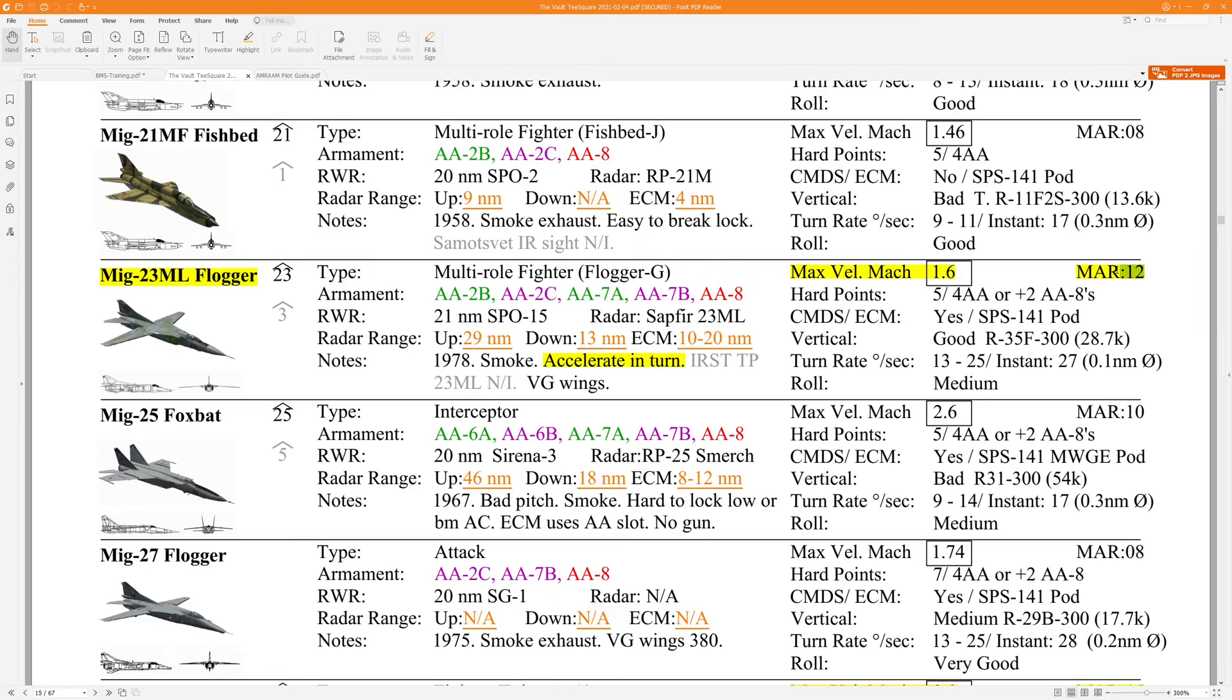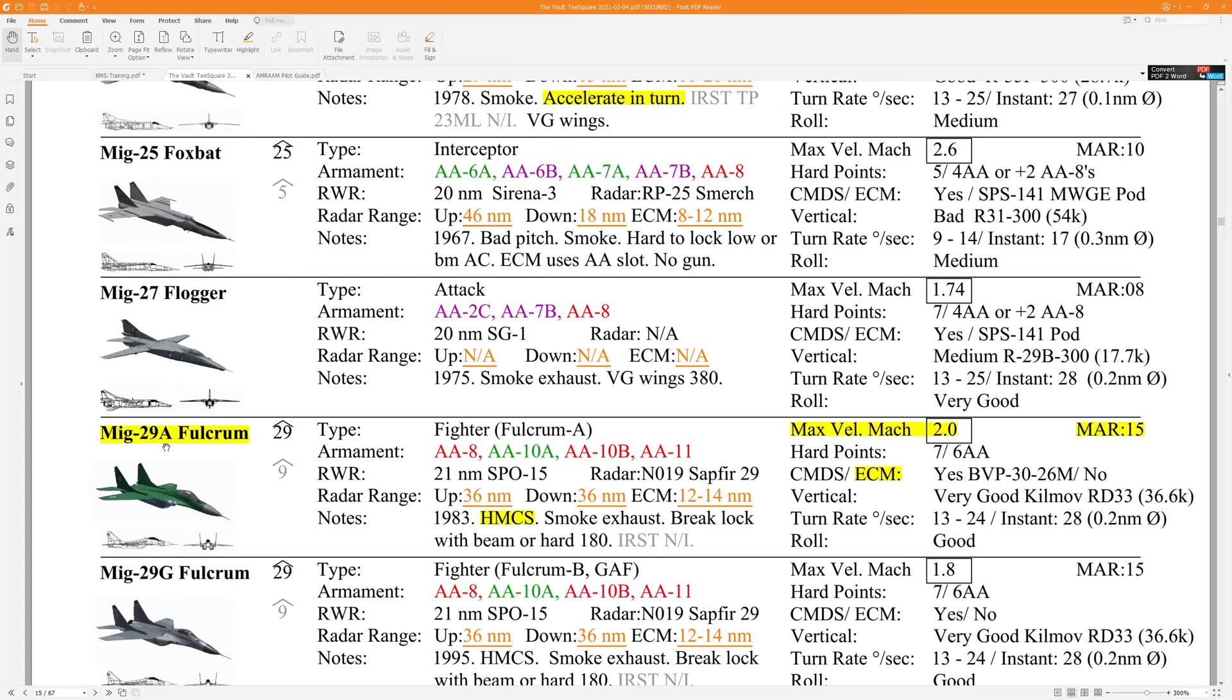We can look at the MiG-23. We see that we've got a minimum abort range of 12 miles for this guy. And that factors in the capabilities of the aircraft and the capabilities of their various missiles here that they've got. We can also look at the MiG-29 Alpha, which we're facing in this engagement. We can see that their minimum abort range is a bit further, 15 miles.